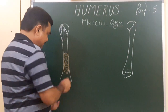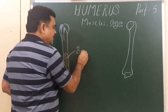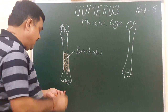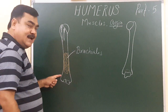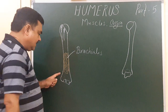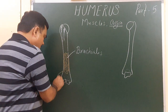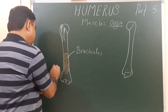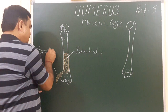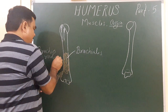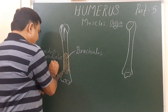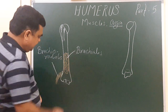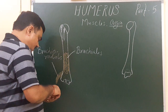This is the brachialis muscle. Brachialis takes origin from the anterior aspect of the humerus. This is the brachioradialis muscle — it takes origin from the lateral supracondylar ridge, specifically the upper two-third part. The lower one-third part gives origin to extensor carpi radialis longus.